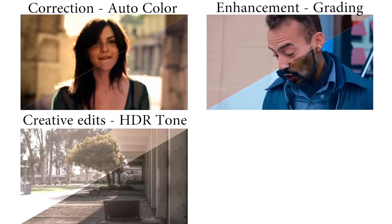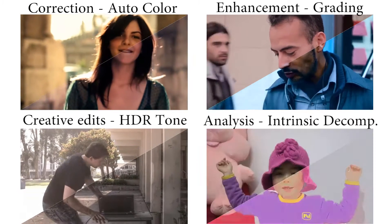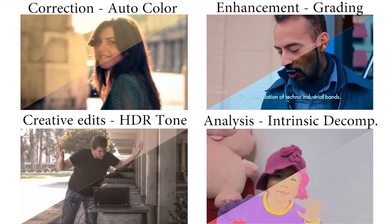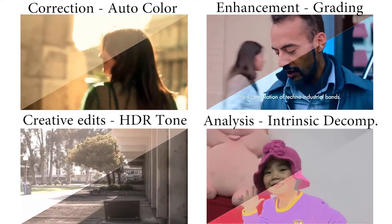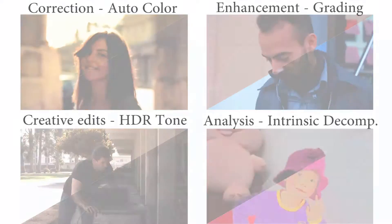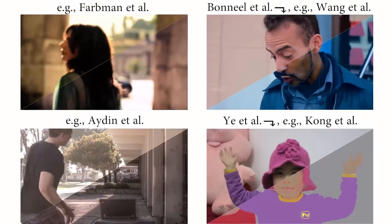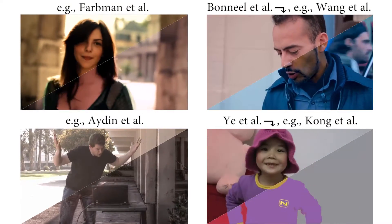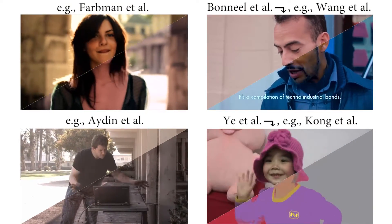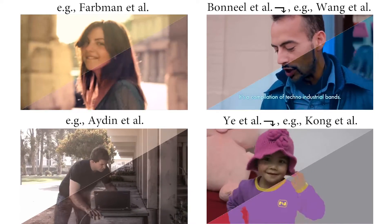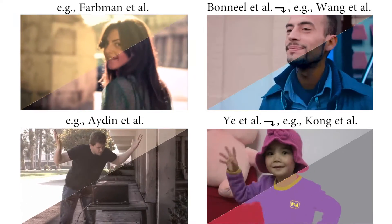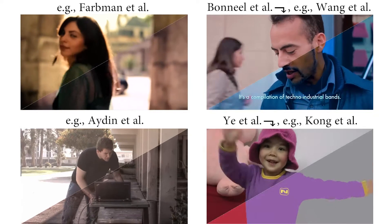Advanced image processing algorithms allow correction, enhancement, creative edits, and analysis. However, many of these are inconsistent when applied frame by frame to videos. Explicitly accounting for temporal consistency in each algorithm takes time and effort, and as such there are fewer video processing algorithms available than for images.